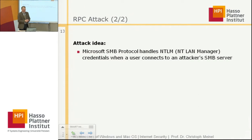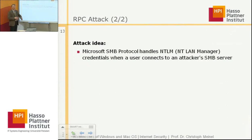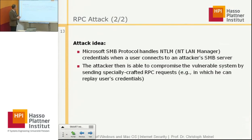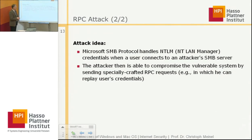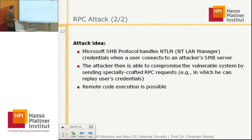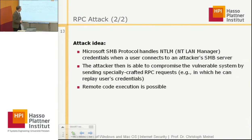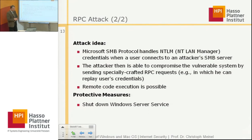The RPC attack scenario works as follows. The Microsoft SMB protocol handles NTLM NT LAN Manager credentials when a user connects to an attacker's SMB server — similar to the SMB relay attack. The attacker is then able to compromise the vulnerable system by sending specially crafted RPC requests in which the attacker replays a user's credentials, allowing the attacker to execute remote code.